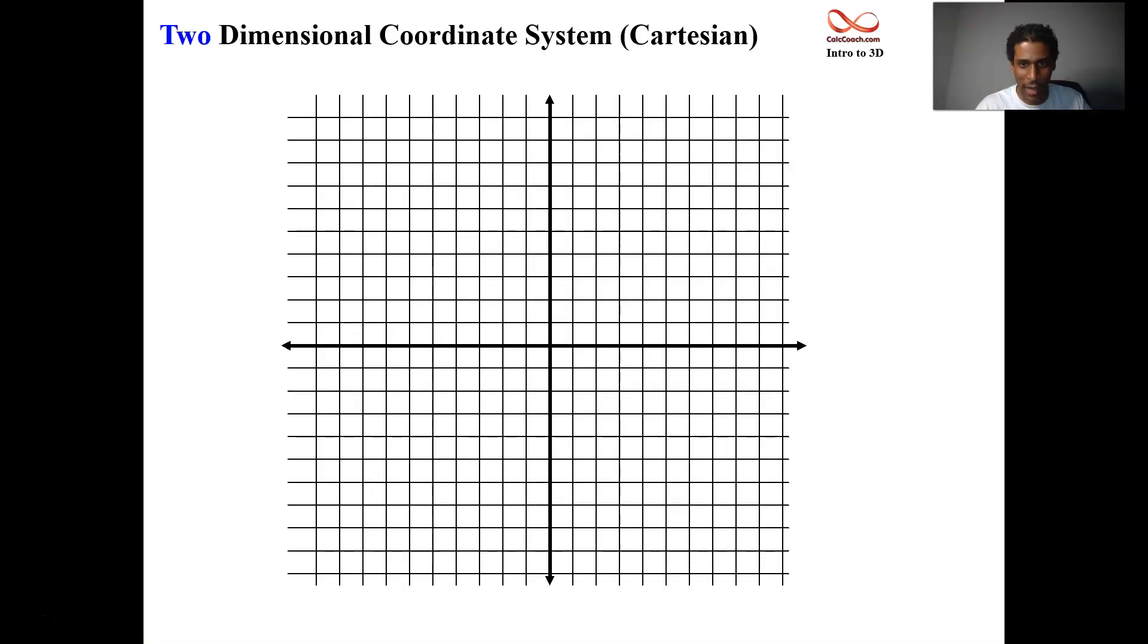So we know about 2D coordinate systems, no doubt about it, right? We have the XY plane, we didn't call it that, but yeah, we have the x-axis, we have the y-axis, and we have the grid. Sounds great. Now we need to graduate.